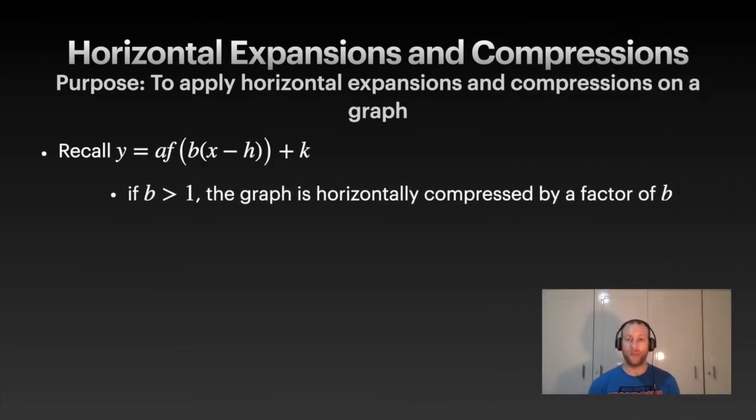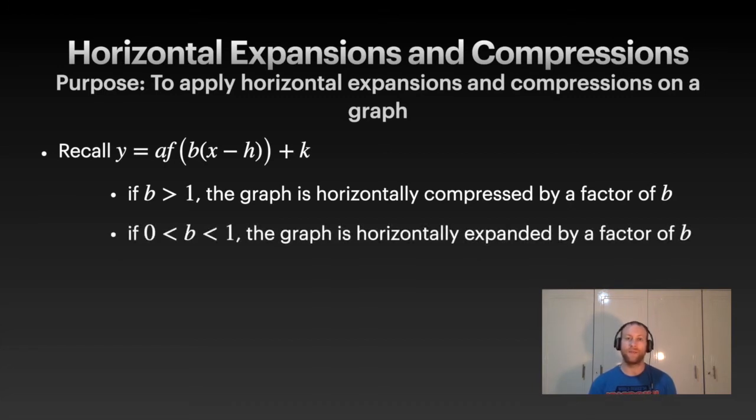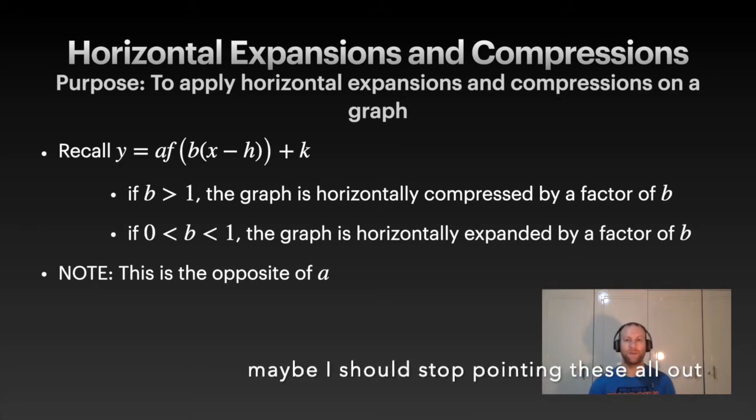If we look at the b values, you're going to see a reversal of this. If b is greater than 1, that means it's going to compress by a factor of b. And if it's between 0 and 1, the graph is going to expand by a factor of b. Note with this, it's the opposite of a. It's similar to when we dealt with h. Remember, if h was positive, or if it's x plus 5, we shift it to the left. Whereas, if it's the plus k is 5, it's positive 5, then we go up. So, the x's just treat things as opposites. Just remember that.